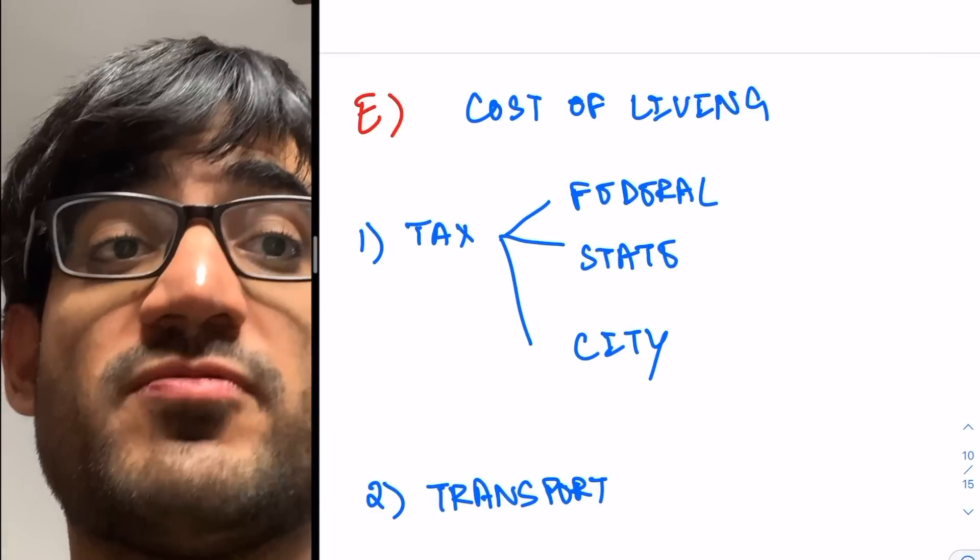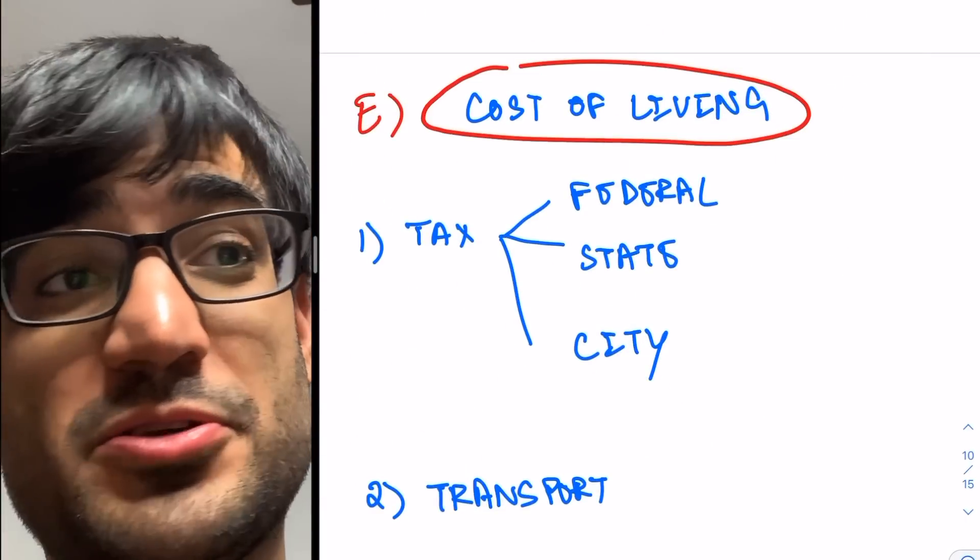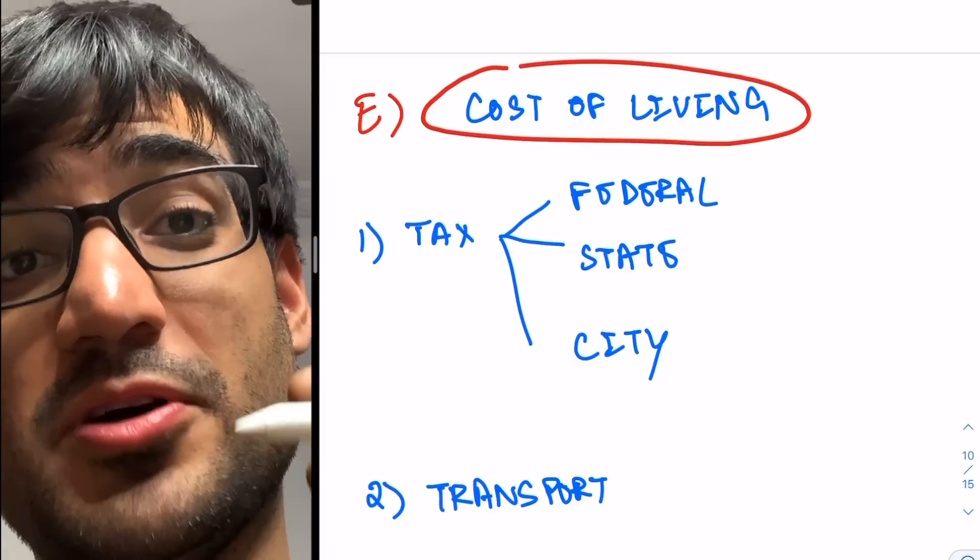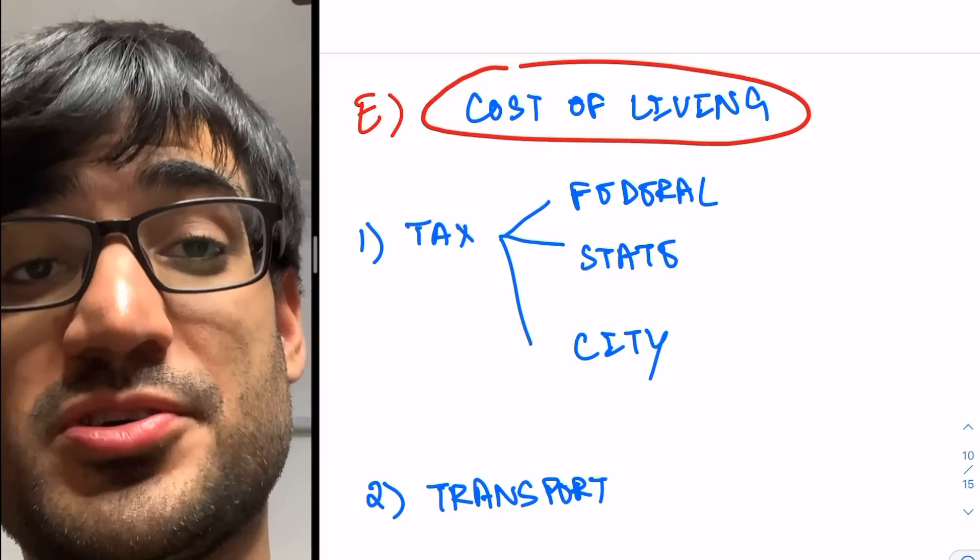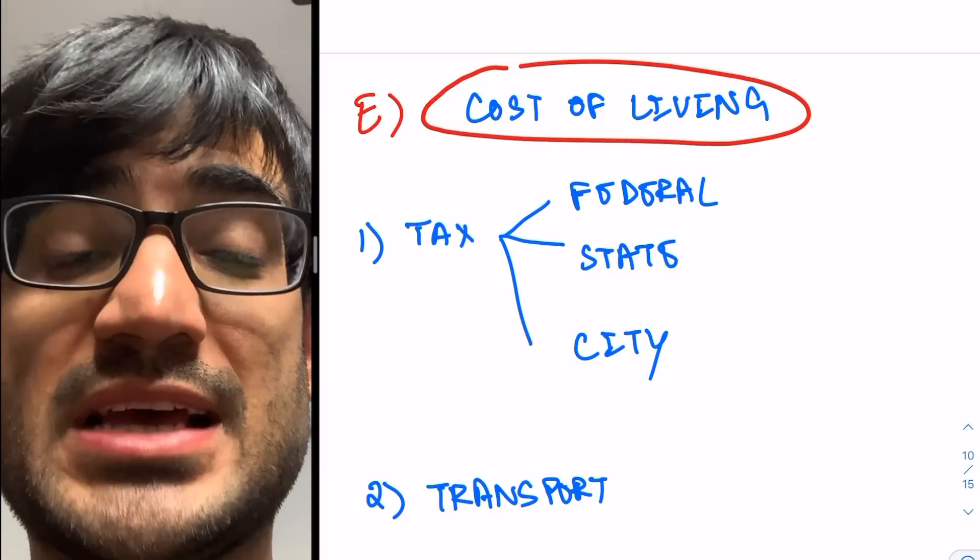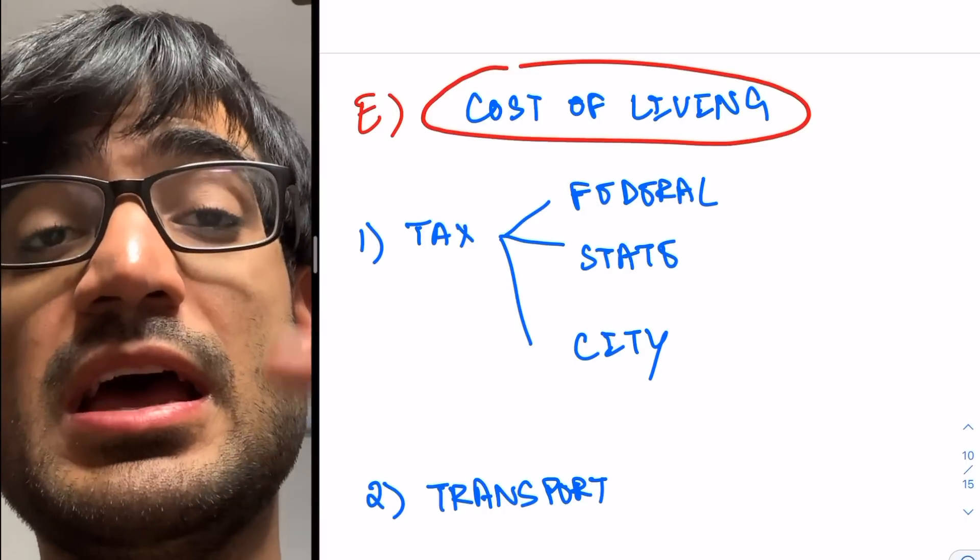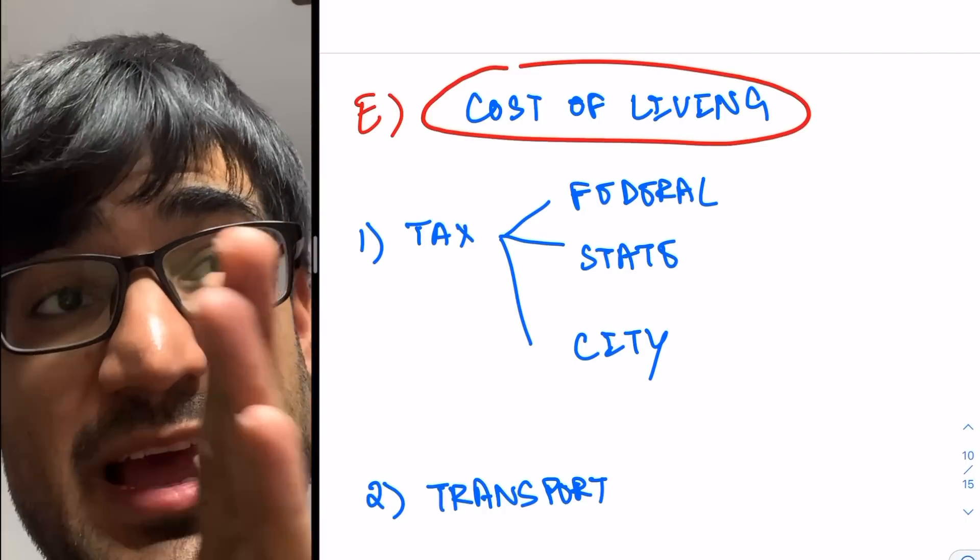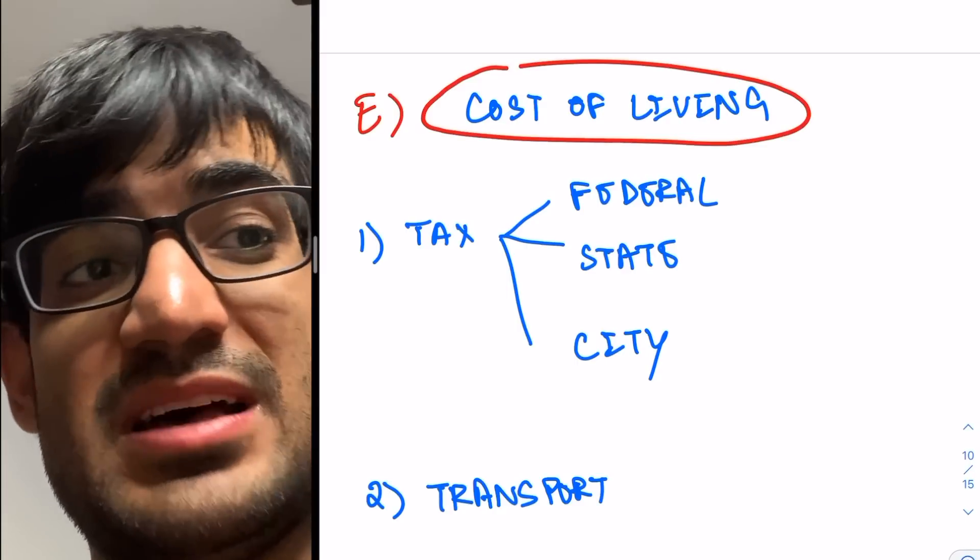Now let's talk about cost of living. Cost of living is incredibly important to consider in this whole discussion of residency salary. Because number one, the more the cost of living, the more your residency salary is to offset that cost of living. But second thing to consider is sometimes the balance between cost of living and the residency salary isn't as much. Let me give you an example.